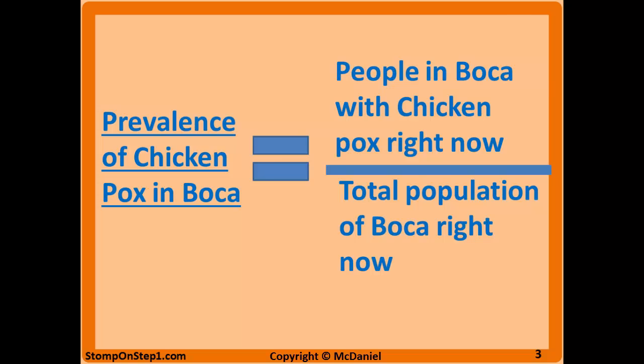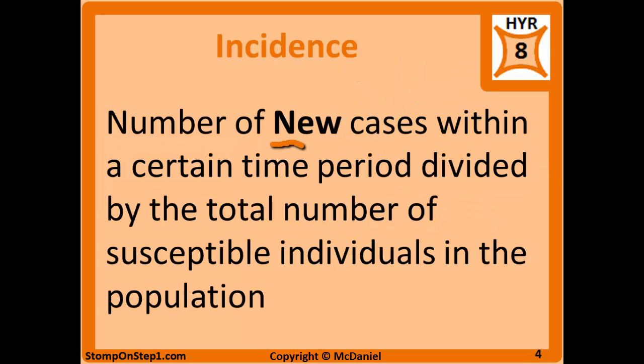For example, the prevalence of chicken pox in Boca Raton would be people who have chicken pox right now divided by the total population of Boca. Incidence is the number of new cases within a certain time period divided by the total number of susceptible individuals in the population. The key difference is incidence measures new cases over a time period, usually a year, while prevalence measures total cases at a given point in time. For incidence, you should only include susceptible individuals in the denominator.